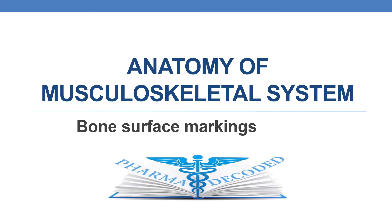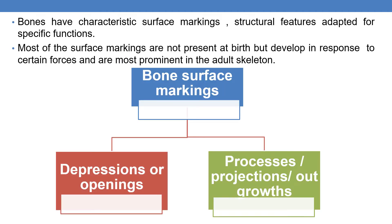Hello everyone. Now let us discuss the anatomy of the musculoskeletal system. In the current session, we will be focusing on bone surface markings. Bones have characteristic surface markings, which are structural features adapted for specific functions. Most surface markings are not present at birth, but they develop in response to certain forces and are most prominent in the adult skeleton.